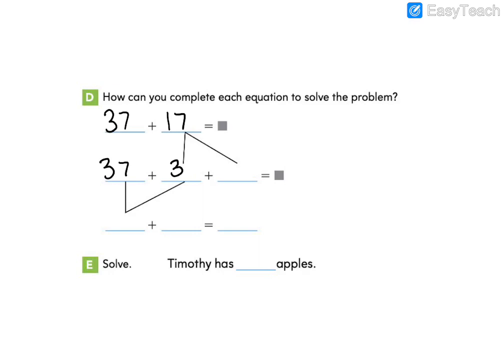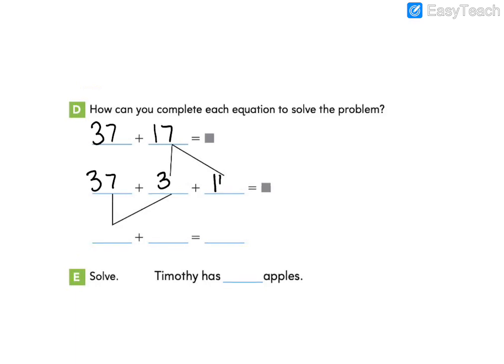When I decompose or break apart 17 to 3, I have how many remaining? You can look back at your picture to see. You should have found that you have 14 remaining. We know that 3 plus 37 is 40 because it will get us to our next tens number. Then we'll add our 14.